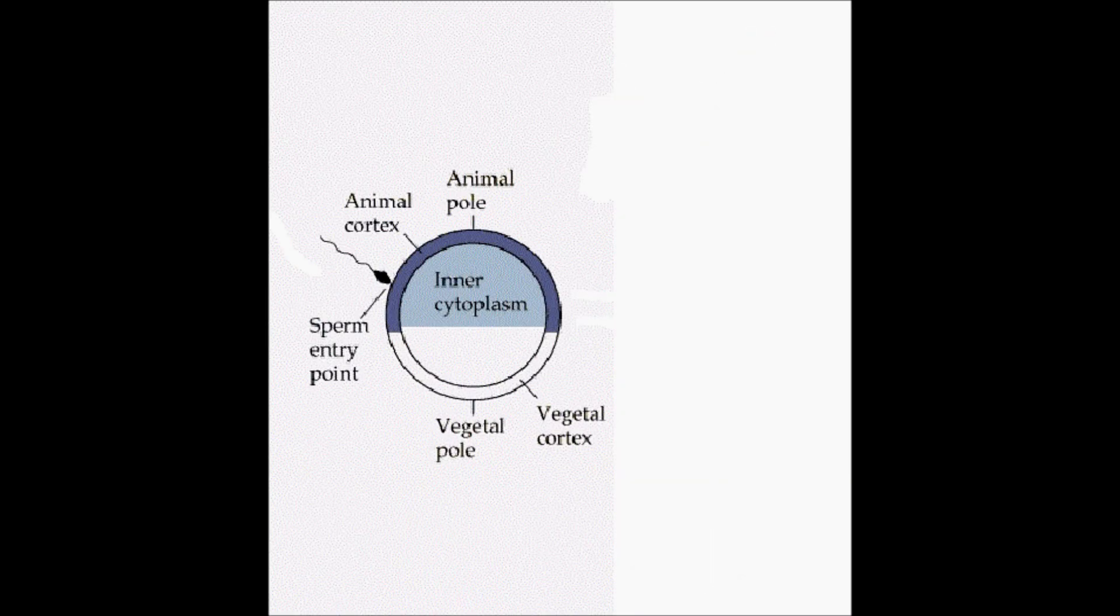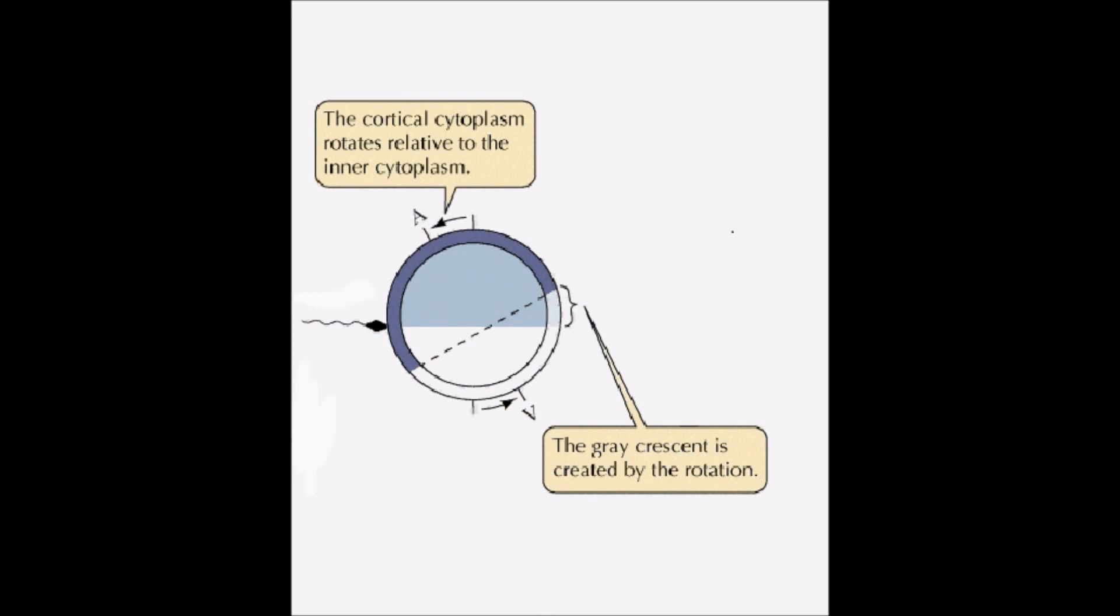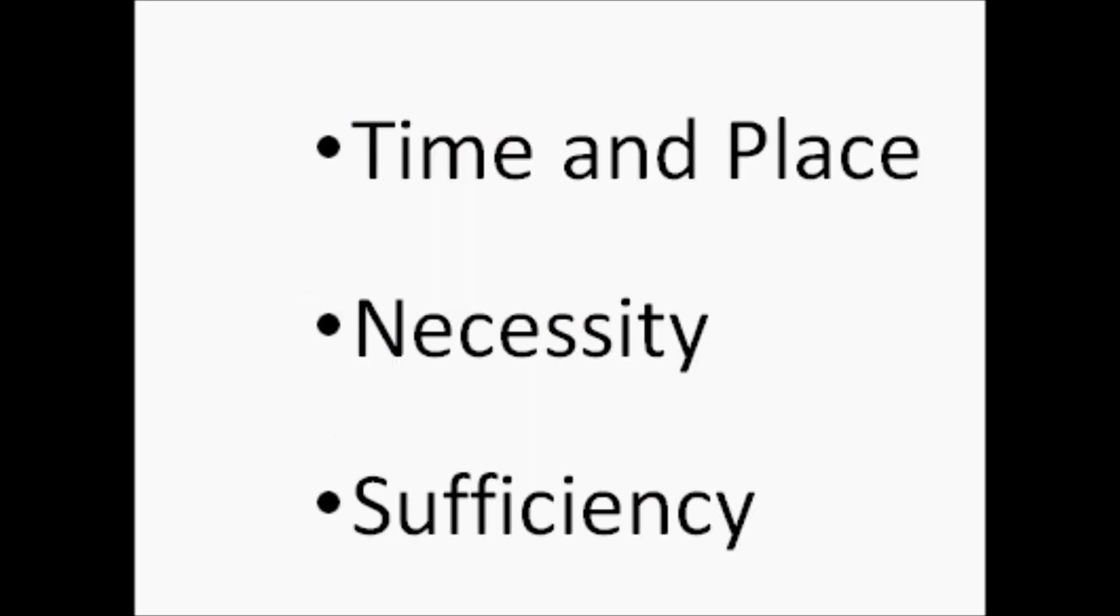Sperm will enter the egg causing microtubules to polymerize. This polymerization causes the cortex of the egg to rotate 30 degrees towards the sperm entry point. This process seems to establish the future dorsal side of the embryo, but to prove it we must show cortical rotation's time and place, necessity and sufficiency for dorsalization.